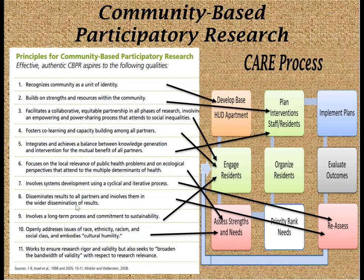Eight, it disseminates results to all partners and involves them in the wider dissemination of results. The sustainability element of this cyclical process helps re-evaluate the problem from various lenses. This iterative process and the sustainability element are very important in terms of the co-builders of the implementation. Nine, involves a long-term process and commitment to sustainability — the circular process of building and planning, implementing plans, evaluating, reassessing, and engaging residents could go on for a number of years, annually re-evaluating and adjusting, adding more services based on discovery of need.